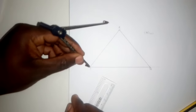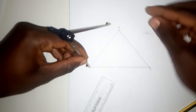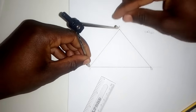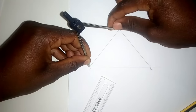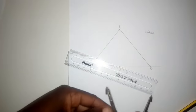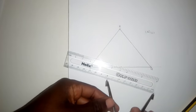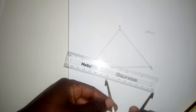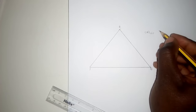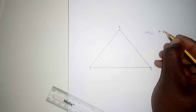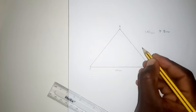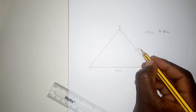Measure from here to here using the compass, then place it on your ruler to get the reading. This is 7.80 centimeters.